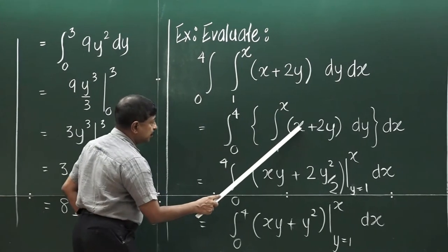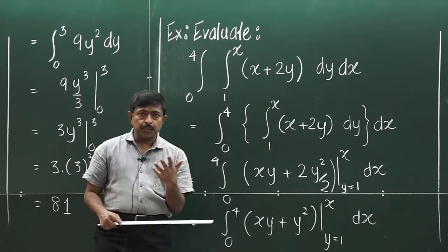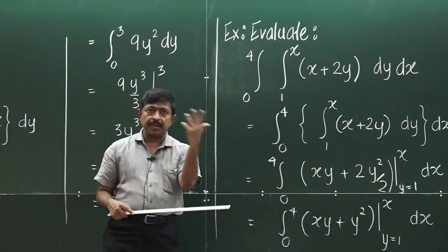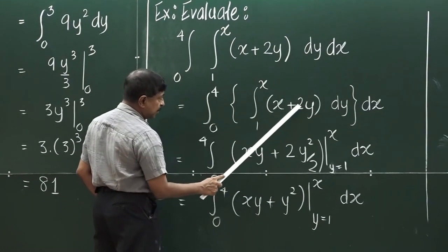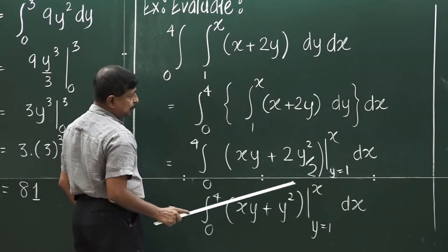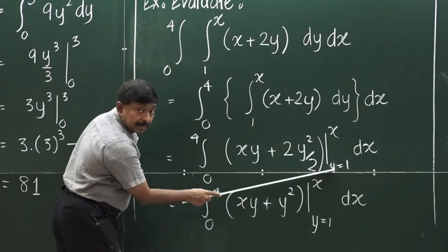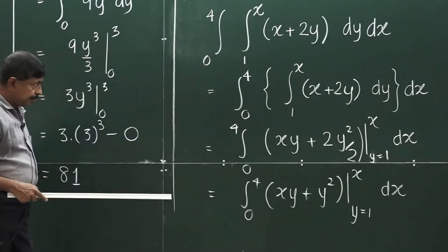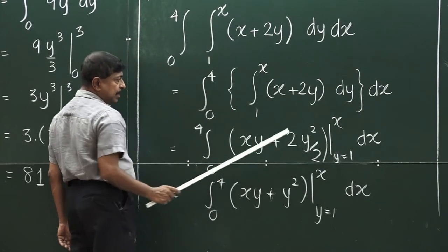So x is kept as a constant and the variable is y. The integrand is xy — integrating xy gives xy²/2. Since the second term 2y is free of x, integrating 2y gives y². So you have 2 times y²/2. The limits are from 1 to x. You should indicate the variable to avoid confusion.